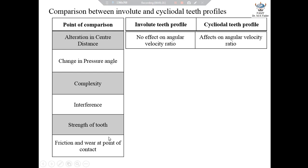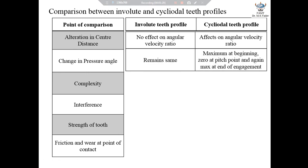The second point is change in pressure angle. In case of involute teeth profile, the pressure angle remains constant right from the beginning of engagement to the end of engagement. However, in case of cycloidal teeth profile, the pressure angle is maximum at the beginning of engagement and it progressively reduces to zero as the point of contact shifts towards the pitch point. At the pitch point the pressure angle is zero, and once again the pressure angle increases towards the end of engagement and becomes maximum at the end.